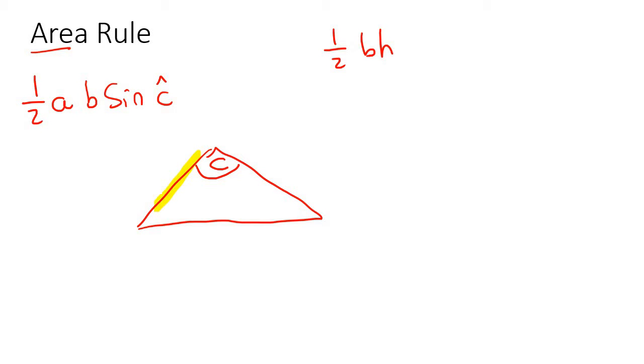So that would be this side, and that would be this side. And that could be like your A and your B. And then you would just go ahead and use this formula.